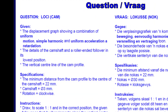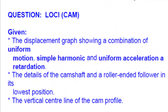Let's take a quick look at the question. Given to us is the displacement graph showing a combination of uniform motion, which we know is a straight line on our graph, then a simple harmonic motion, which requires construction of a half circle, and then uniform acceleration and retardation, which requires us to divide a line into equal segments. The details of the CAM shaft and the roller ended follower in its lowest position — meaning resting at minimum displacement — and the vertical center line of the CAM profile are already printed on our answer sheet.